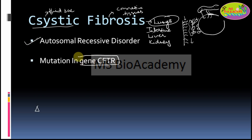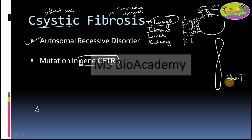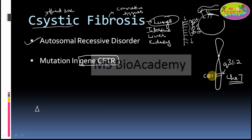There is a gene mutation that happens in the CFTR gene. This gene is present on chromosome number 7, specifically on the long arm of chromosome 7. The position of the CFTR gene on the long arm of chromosome 7 is q31.2. If a certain kind of mutation happens in this gene, it leads to the condition known as cystic fibrosis.